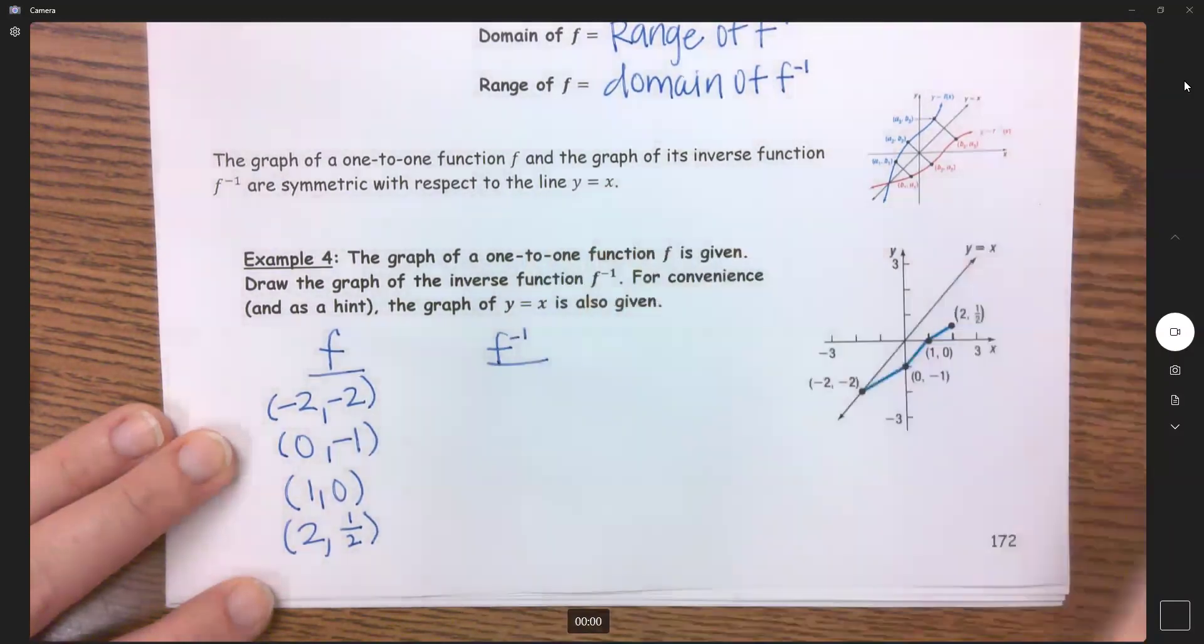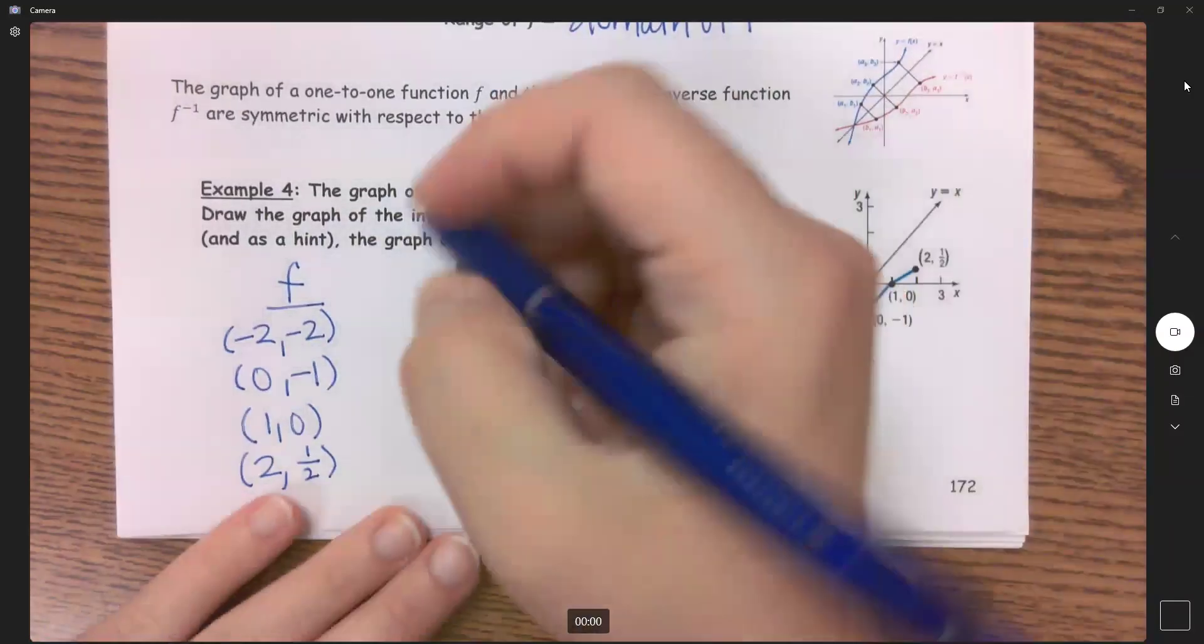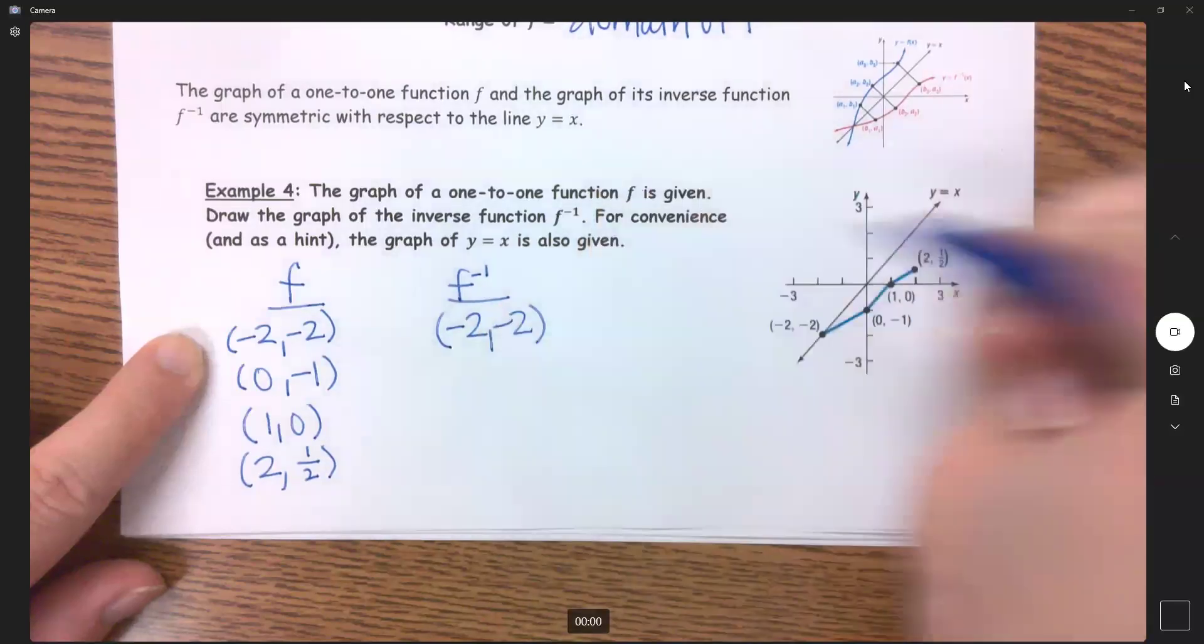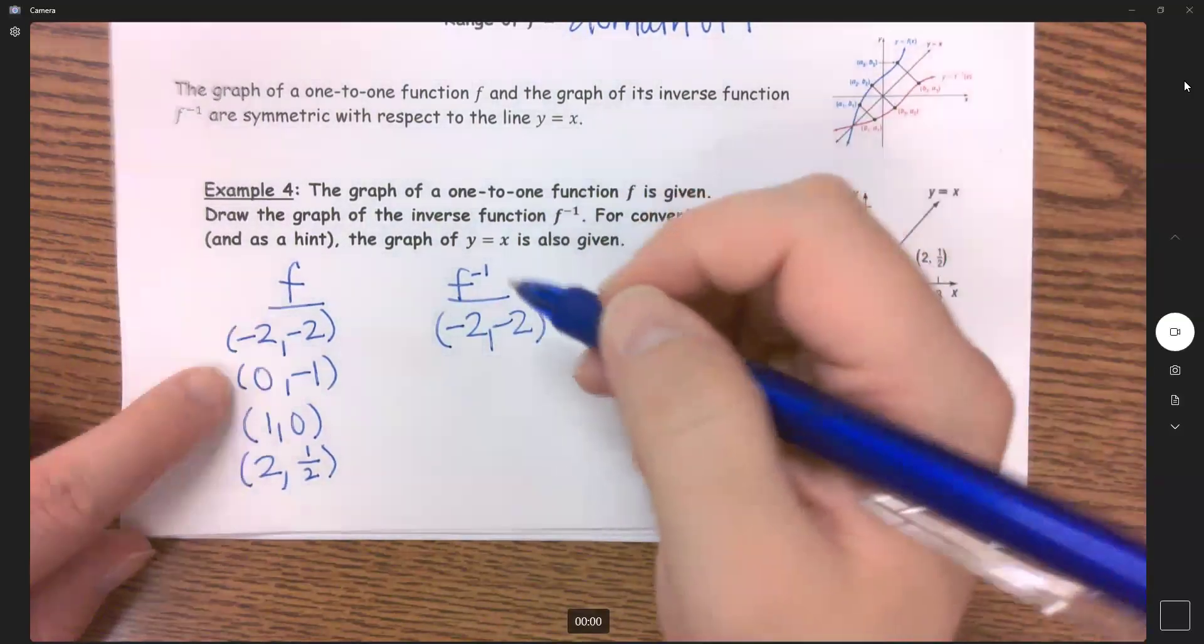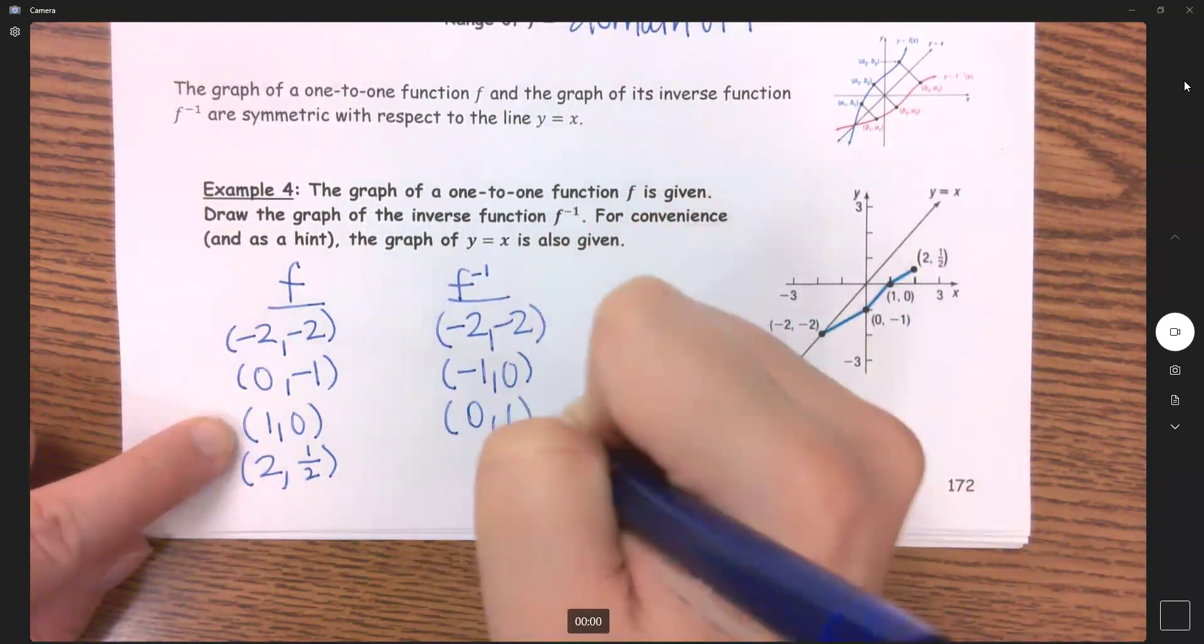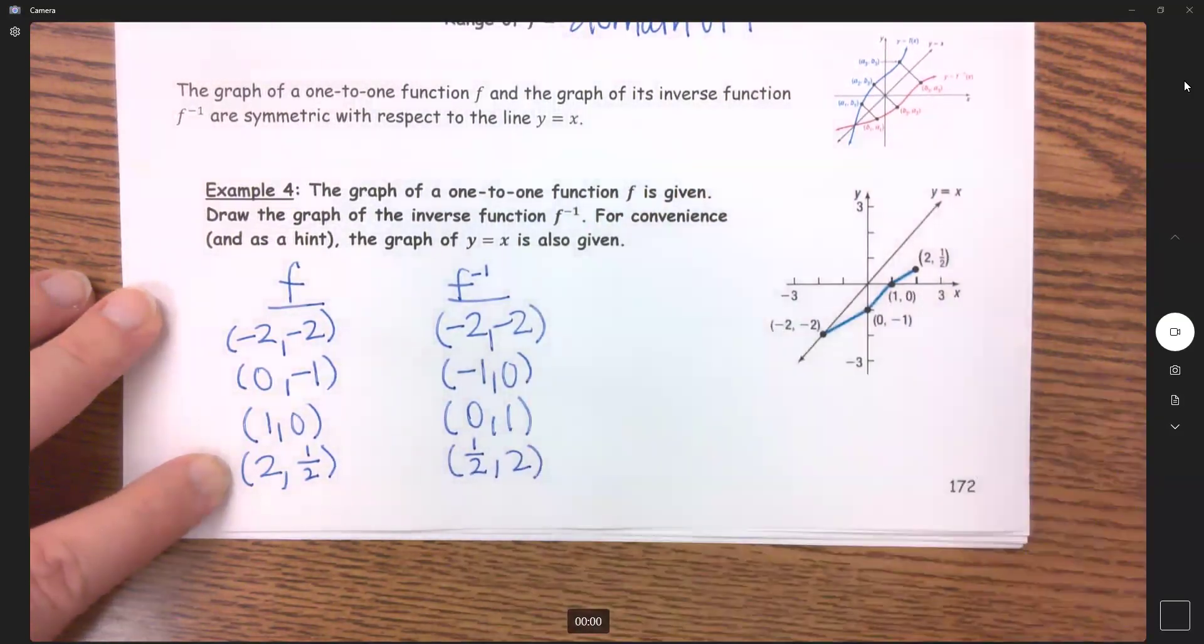So now to find my inverse function and to plot it all I'm going to do is switch my x and y. So negative 2, negative 2 doesn't change since x and y are the same but then this one here will become negative 1, 0. This one becomes 0, 1 and this one becomes 1 half, comma, 2.